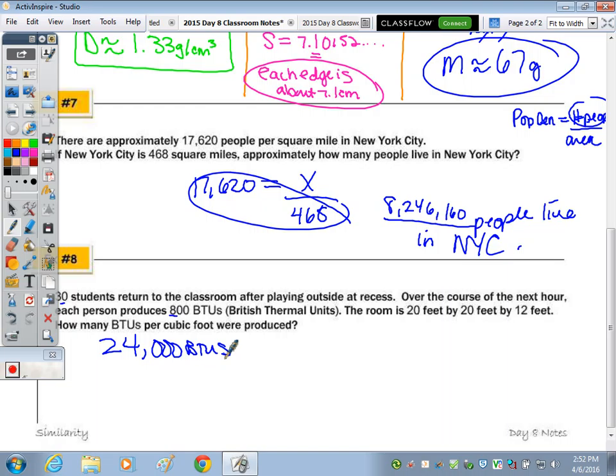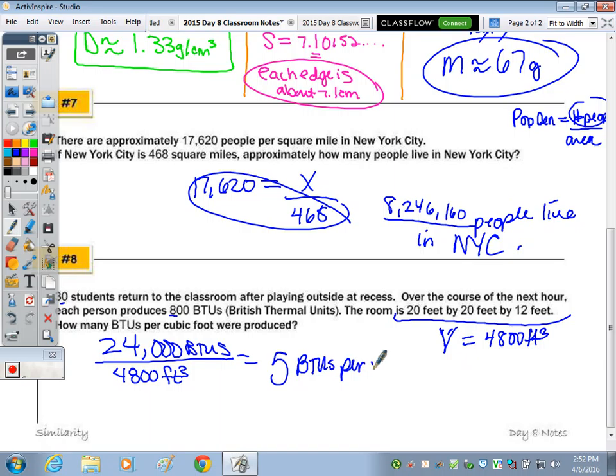Over the next course, we have that the room is 20 feet by 20 feet by 12 feet. So the volume, 20 by 20, 20 times 20 is 400. 400 times 12? 4,800 cubic feet. Now we want to find how many BTUs per cubic foot. So we take this 24,000 and do what? BTUs per cubic foot divide by 4,800 cubic feet. And how many do you get? 5 BTUs per cubic foot.